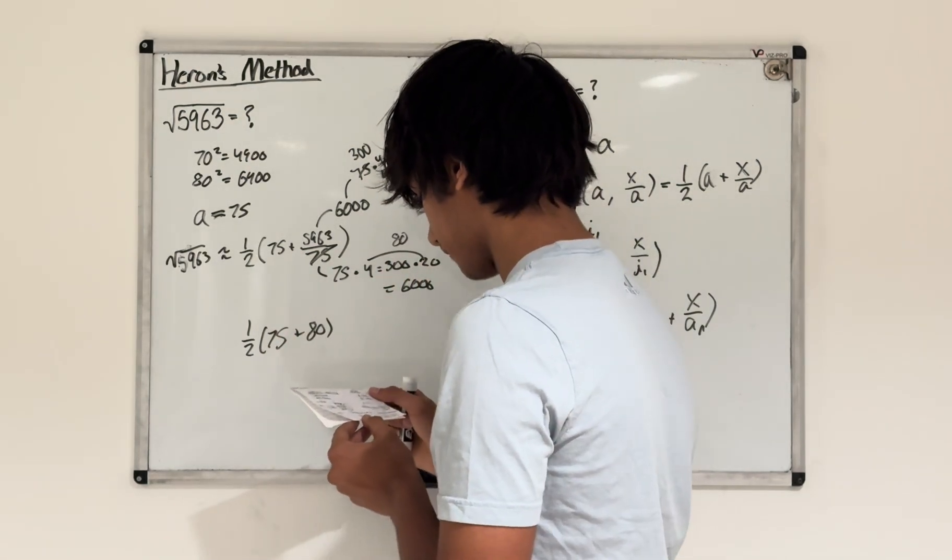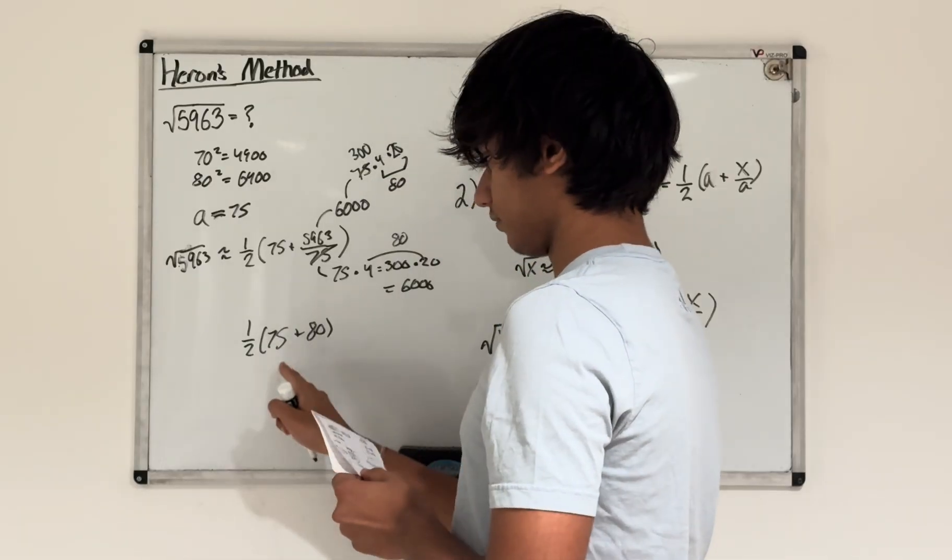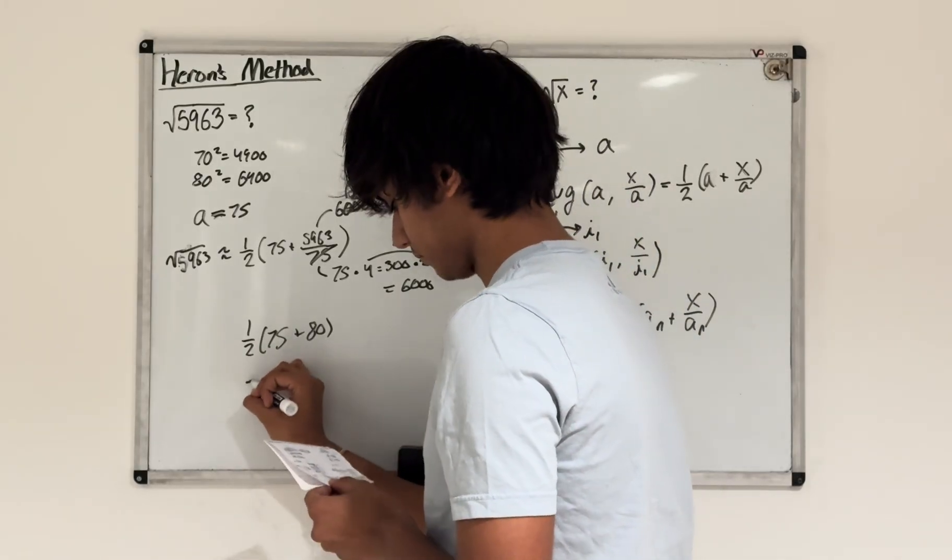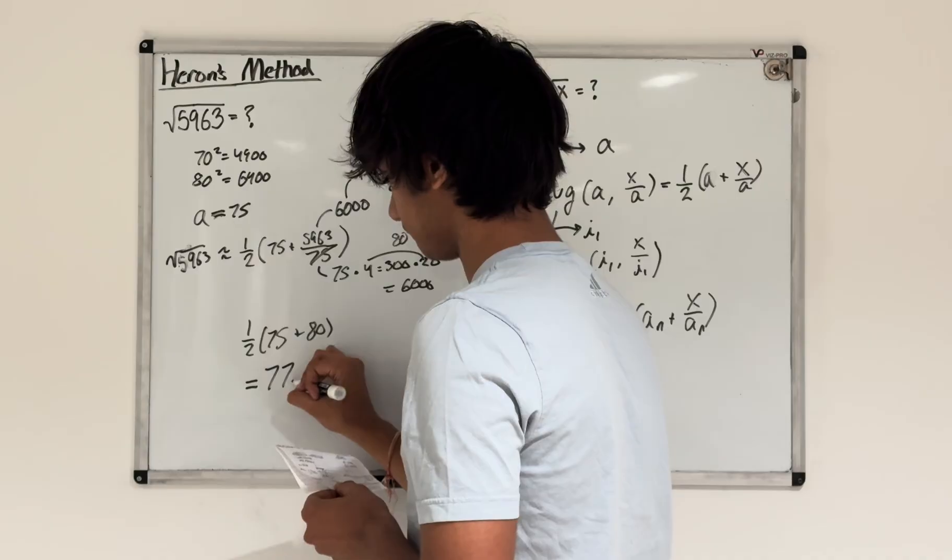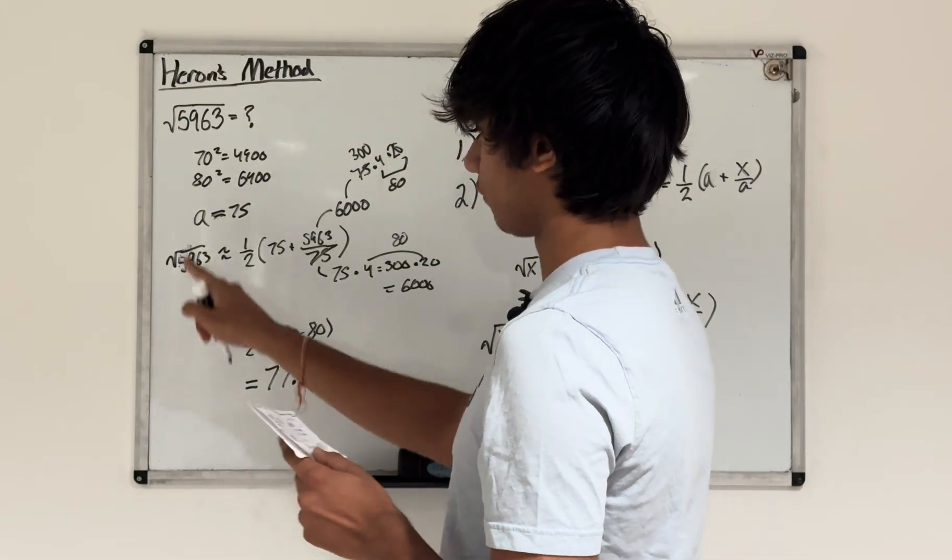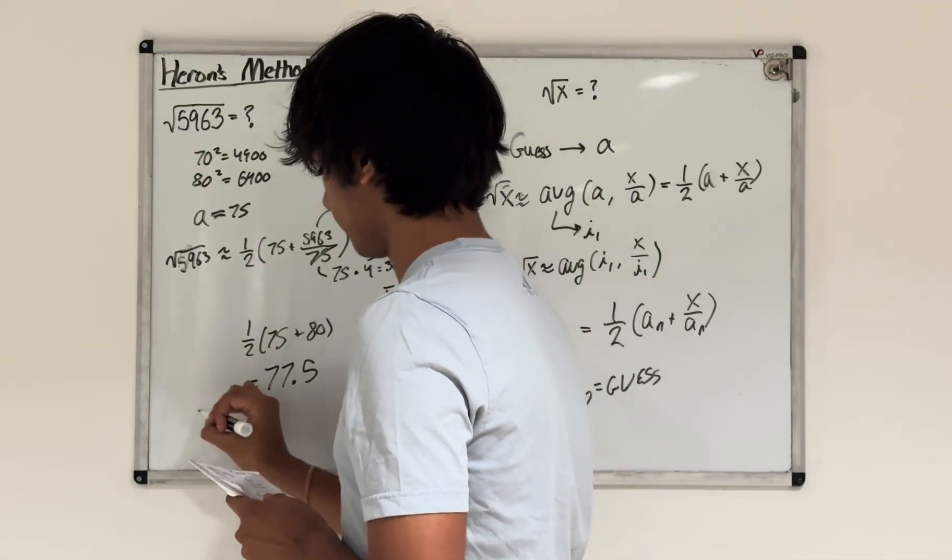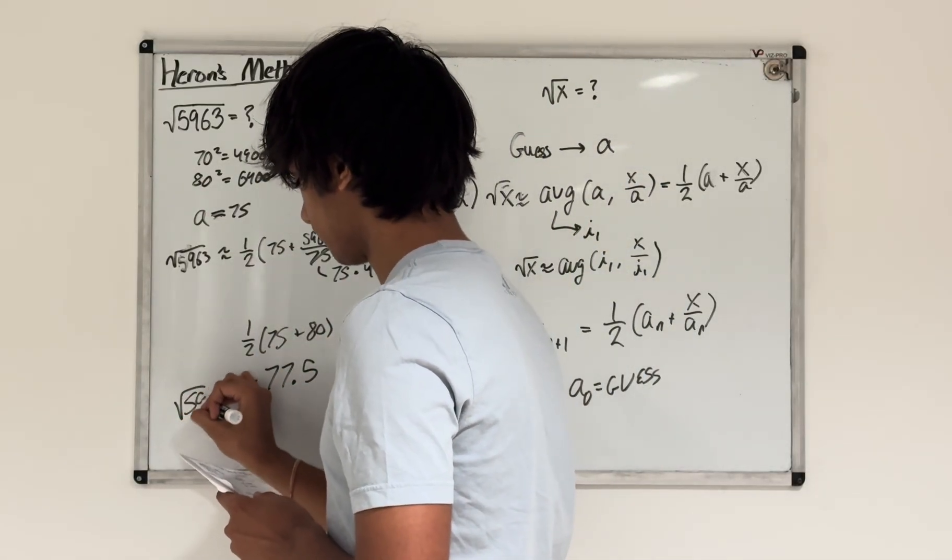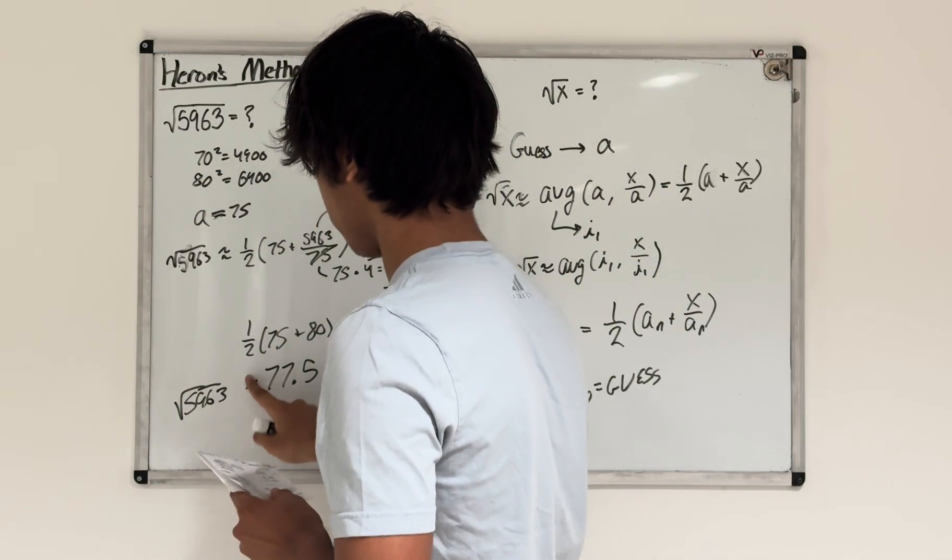Now we can take the average of 75 plus 80. The average of that is equal to 77.5, the average of 75 plus 80. Therefore, my estimation for the square root of 5,963 is approximately 77.5.